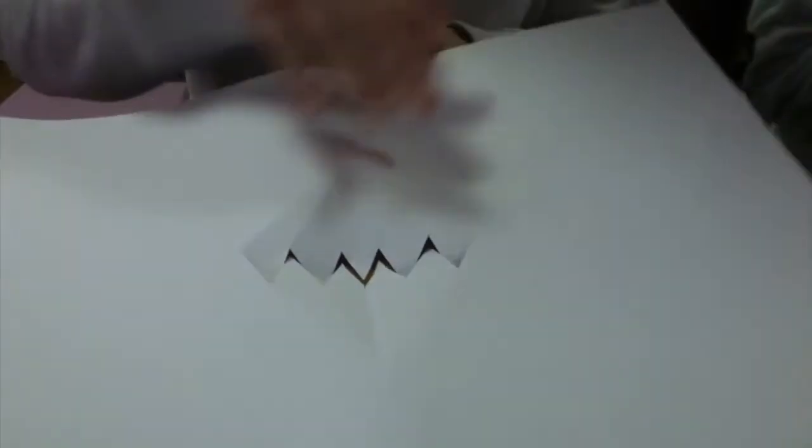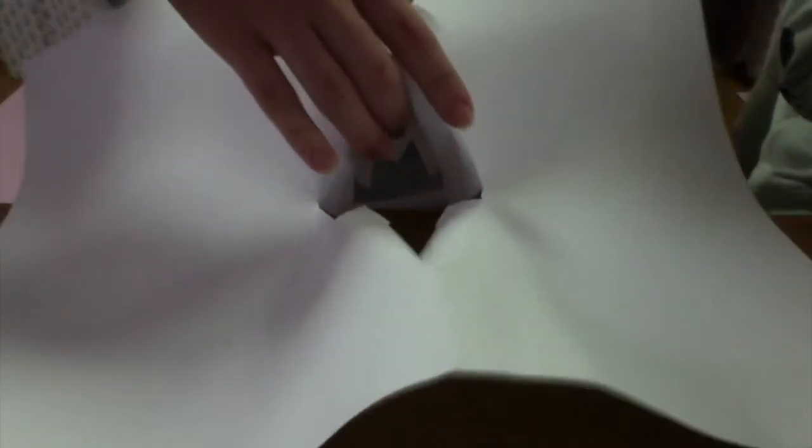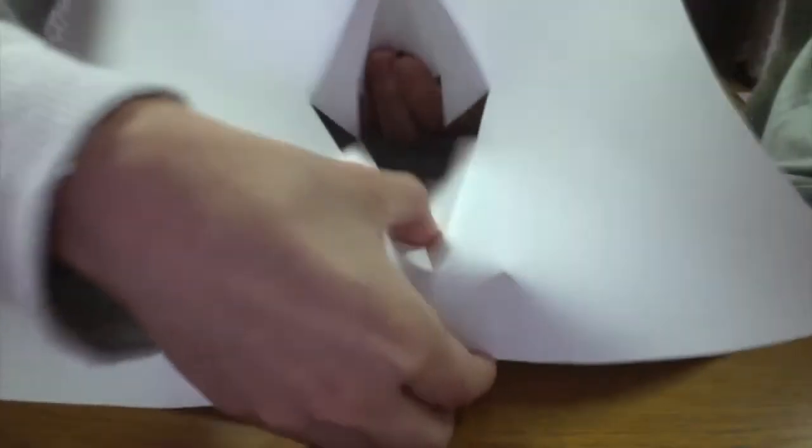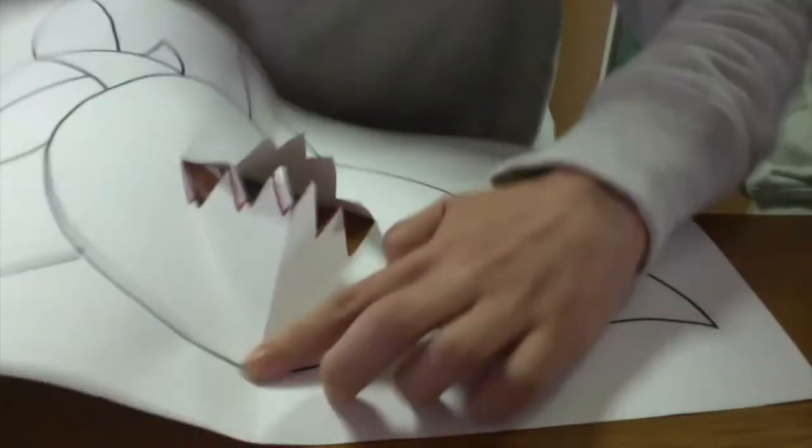Now we are going to make sure that this section becomes 3D by folding the mouth outwards from the back and once again folding the entire page in half.